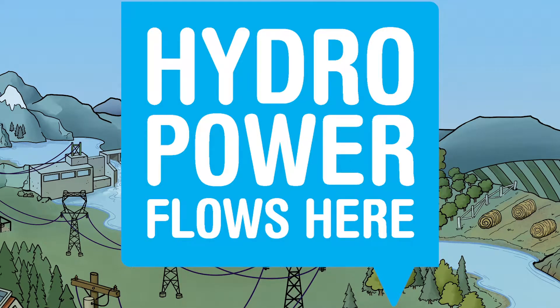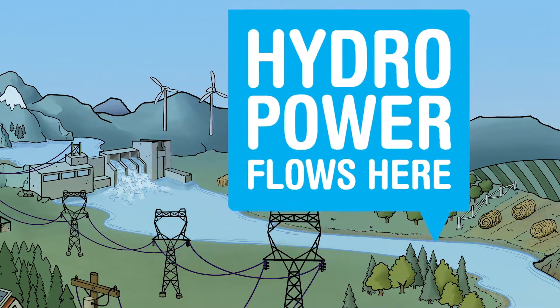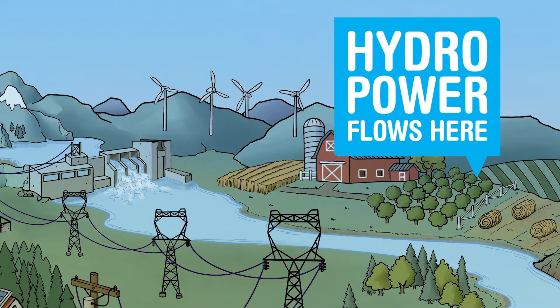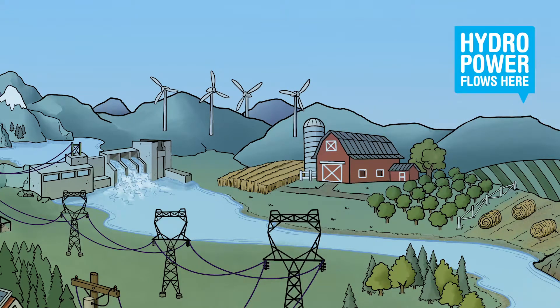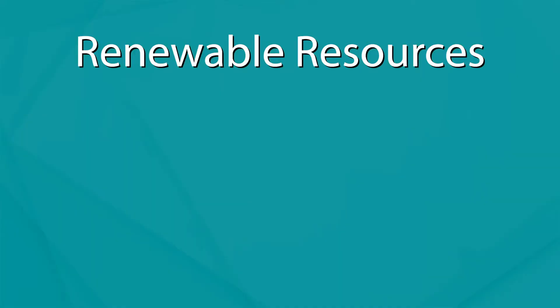The electricity that we deliver to you comes from the Bonneville Power Administration, or BPA. Most of that electricity is hydropower. Hydropower is the largest renewable energy resource in the United States. Hydropower is electrical power made from the flow of water. Basically, hydropower is made when water works to push magnets around copper wires. But before we explain how hydropower is created, let's talk a little bit about renewable resources.